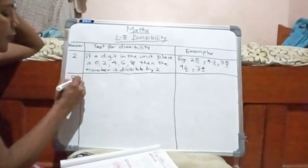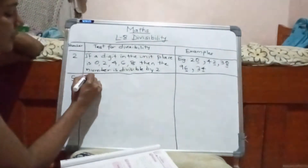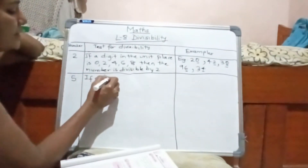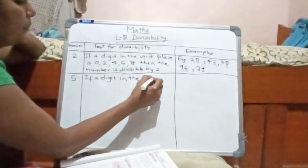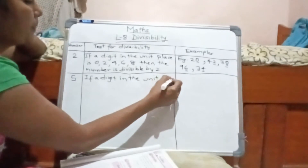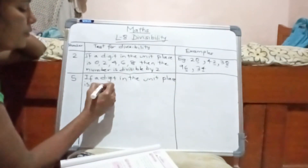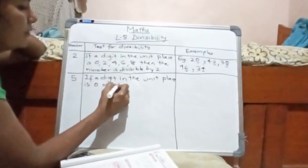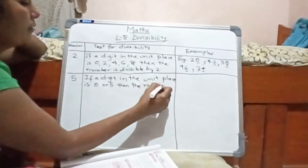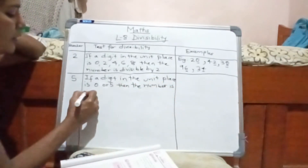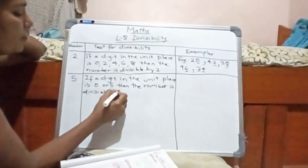Next, divisibility by 5. In the lower class you have done: if the digit in the unit place is 0 or 5, then the number is divisible by 5.